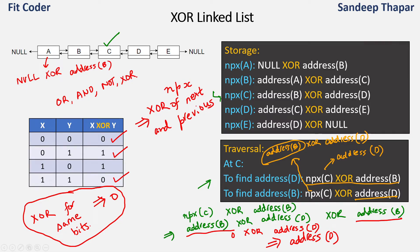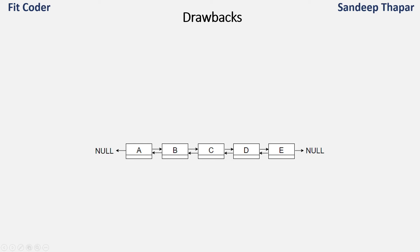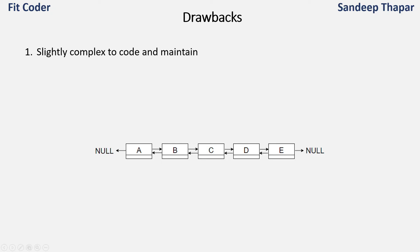Now that we understand how XOR linked list works, let's look at its disadvantages. This method is not very common because it has a few drawbacks. The first drawback is that it is slightly complex to code and maintain. In a linked list we do many traversal operations, and here we have to perform XOR operations every time, making it error prone and difficult to maintain.